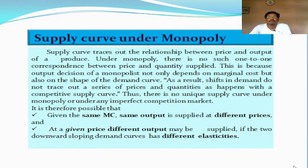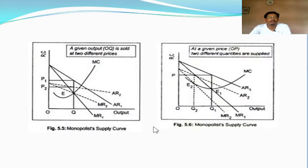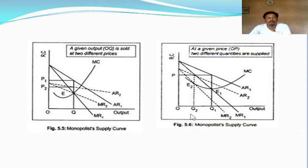These possibilities may be explained with the help of a diagram. In the first possibility, different prices are charged for a particular level of output — that is, at a given level of output, the monopoly seller is charging different prices to different buyers, which is a case of price discrimination. In the other case, for a given price, he is selling different levels of output to different buyers — also a case of price discrimination, which is a unique condition under monopoly market.